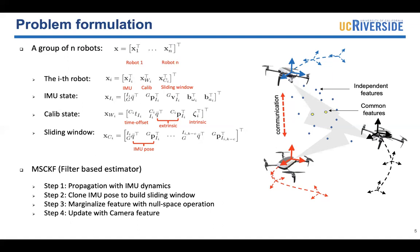After that, in the fourth step, we can make use of all the measurements across the sliding window to update the pose and state.